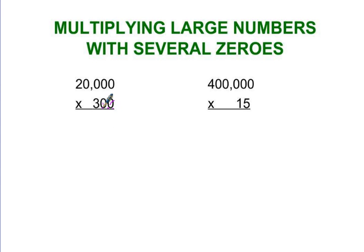So we have 1, 2, 3, 4, 5, 6, I'm going to write 6 zeros, 3, 4, 5, 6, and I'm done with the zeros now, I'm just going to solve whatever's left. 2 times 3 is equal to 6.